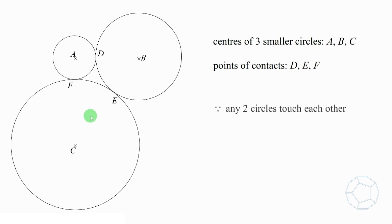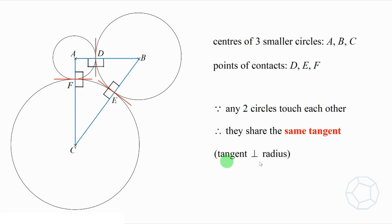Because any two circles touch each other, they share the same tangent at the points of contact. There are the three red lines in the figure. Using the reason tangent perpendicular to the radius, we can say that A, D, B, B, E, C, and C, F, A are all straight lines.